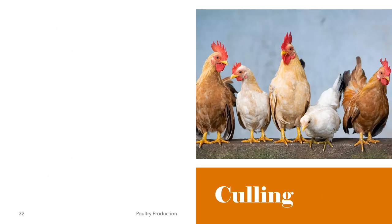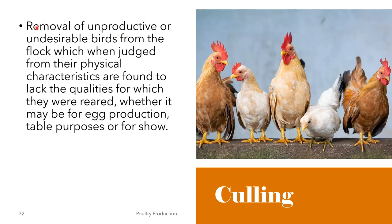We also have culling. Culling is defined as the removal of unproductive or undesirable birds from the flock which, when judged from their physical characteristics, are found to lack the qualities for which they were reared, whether it may be for egg production, table purposes, or for show.